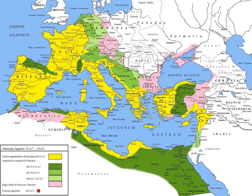241 BC: Sicilia, taken over from the Carthaginians and annexed at the end of the First Punic War. 237 BC: Corsica et Sardinia — these two islands were taken over from the Carthaginians and annexed soon after the Mercenary War, in 238 BC and 237 BC respectively.